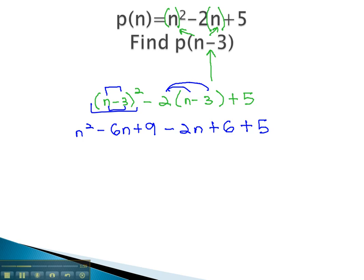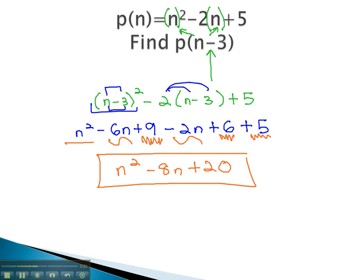To finish this problem, we just have to combine like terms. We have an n squared, minus 6n minus 2n is minus 8n, plus 9, plus 6, plus 5, is plus 20. This is our simplified function, p of n minus 3.